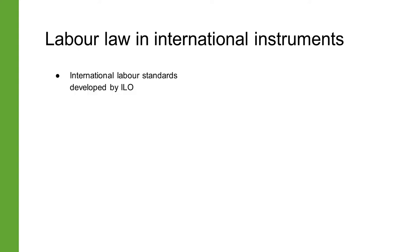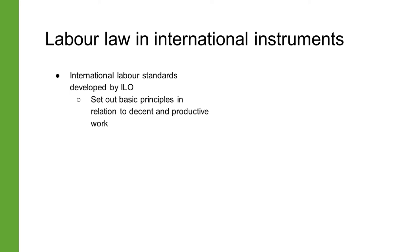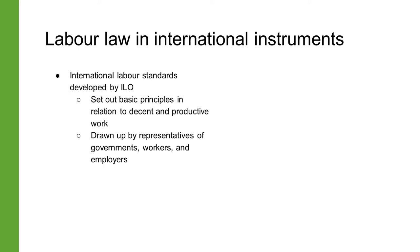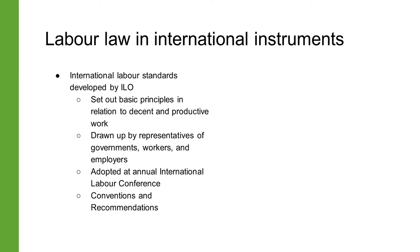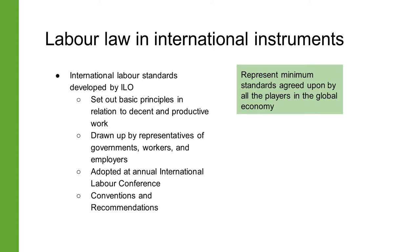Since 1919, the International Labour Organization has maintained and developed a system of international labor standards which set out the basic principles for women and men to obtain decent and productive work. India, a founding member of the ILO, has been a permanent member of the ILO governing body since 1922. The ILO's international labor standards are drawn up by representatives of governments, employers, and workers, and are adopted at the annual International Labour Conference. Because of this tripartite participation, they represent some basic minimum standards agreed upon by all players in the global economy.